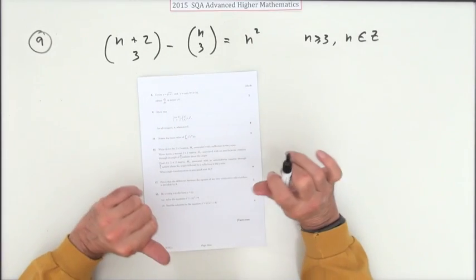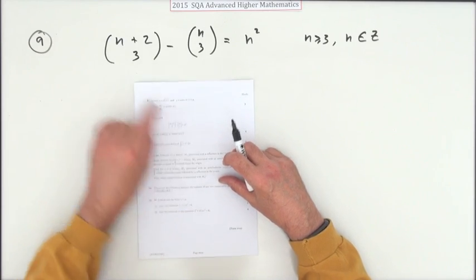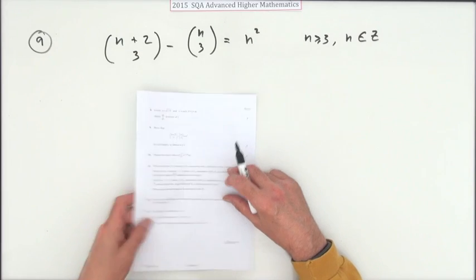So number 9 then from the 2015 advanced higher. Just a little, it's not really a proof, just a demonstration of these combinations.